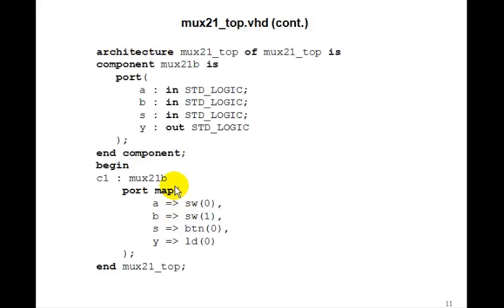So in this case, you can go ahead and download this to your Nexus 2 board, whichever you have, and implement it. And when you push button 0, then whatever switch 1 is should show up on the LED. And if you're not pushing button 0, then whatever switch 0 is should show up in the LED.